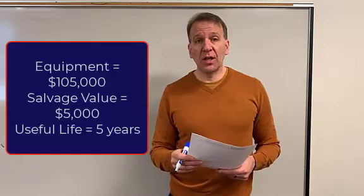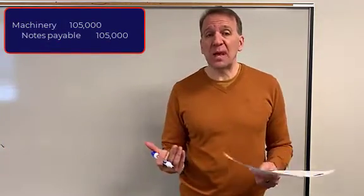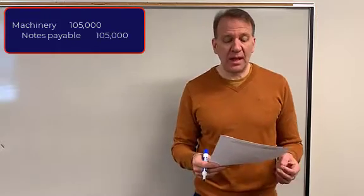So here's the journal entry. We're going to debit the machinery $105,000, credit probably notes payable $105,000 because we probably had to borrow for this.